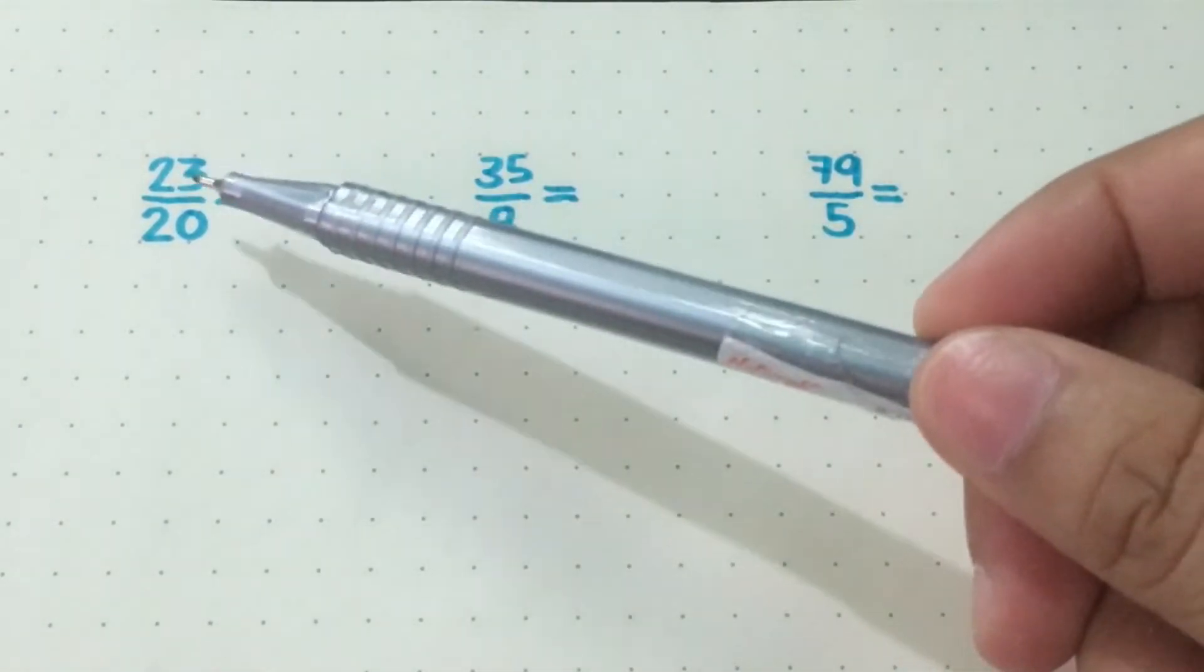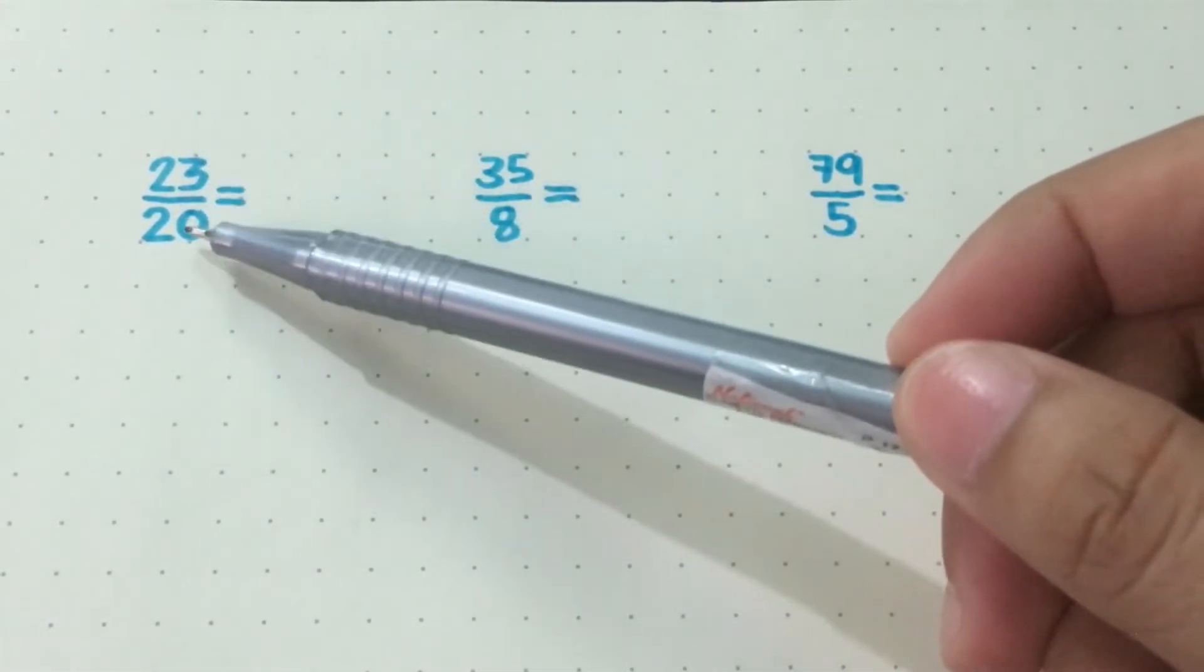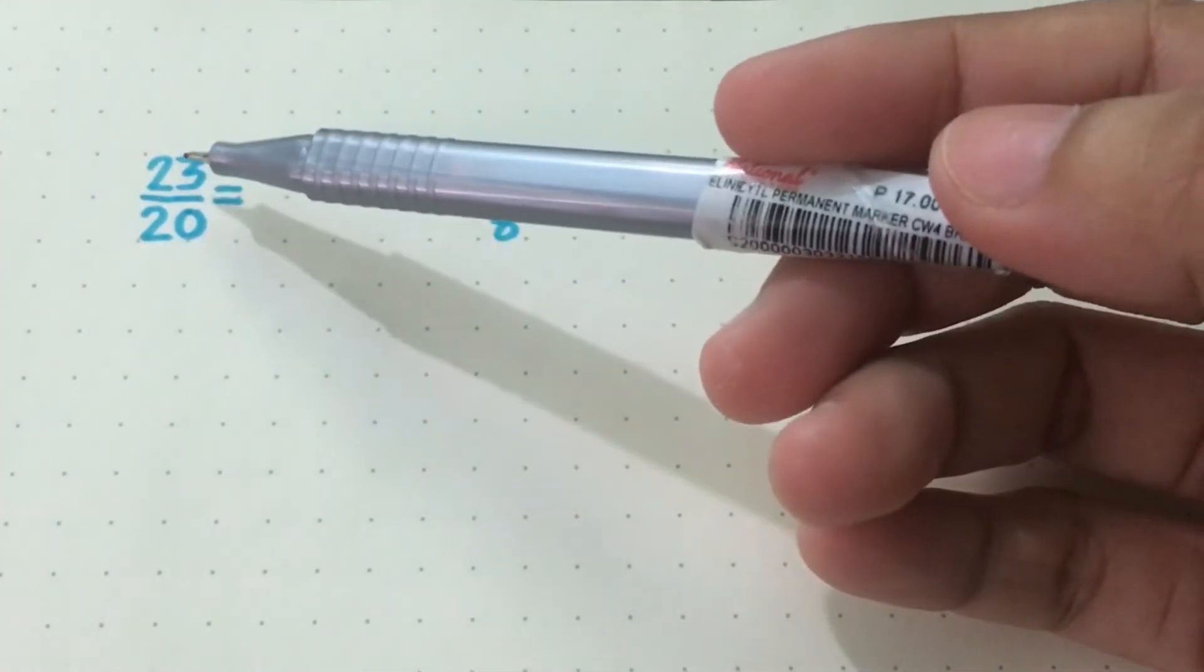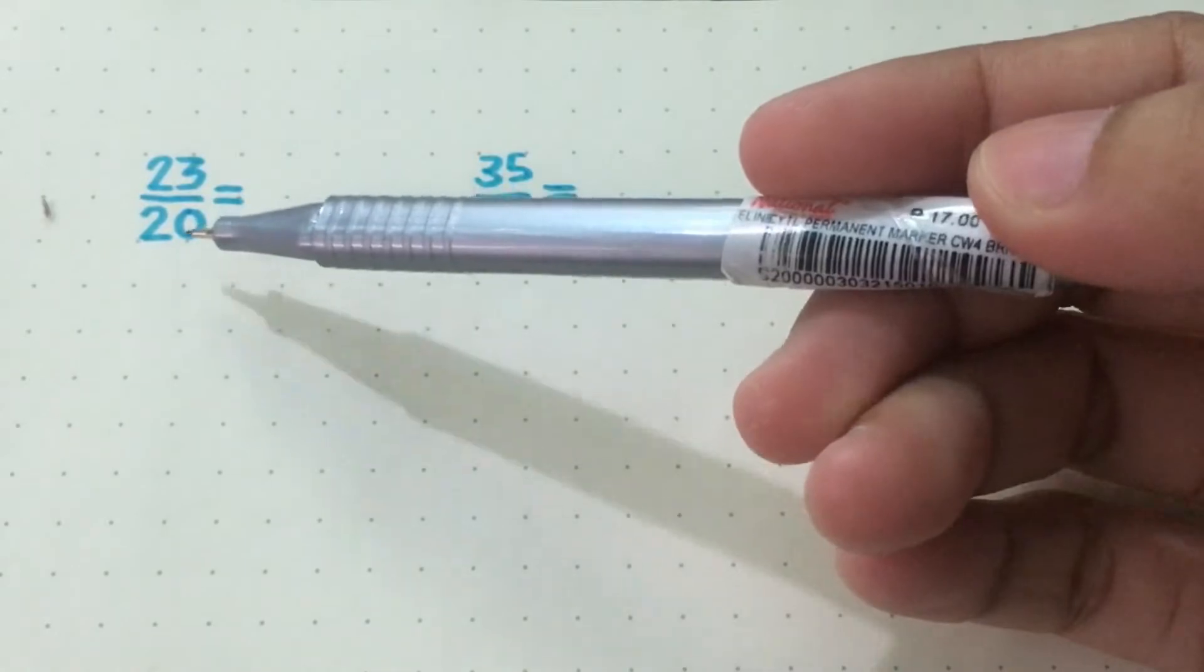Improper fractions are fractions where the numerator is higher or greater than the denominator. To convert this into a mixed number, we may just divide the numerator by the denominator.